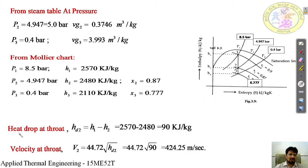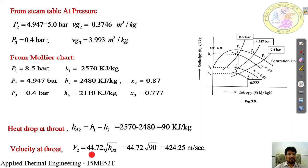The heat drop at the throat: Hd2 is equal to H1 minus H2, which is 2,570 minus 2,480, giving 90 kJ/kg. The velocity at the throat is V2 = 44.72 × √Hd2 = 44.72 × √90, which equals 424.25 m/s.